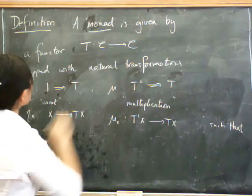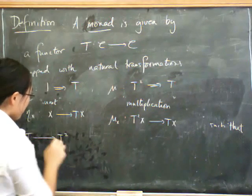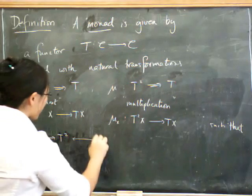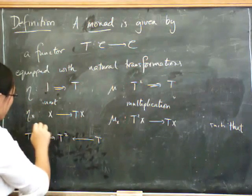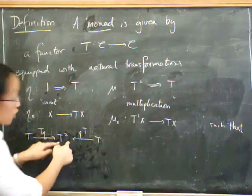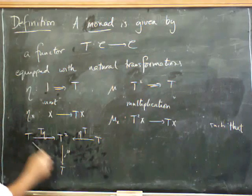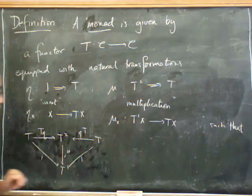Let's start with the unit. First, you can start with T, and you can go over to T squared in two different ways. You can either do eta on the right, or you can do eta on the left. And after you've got yourself to T squared, you can then do mu to get back down to T again. And the point is that that's supposed to be the identity.